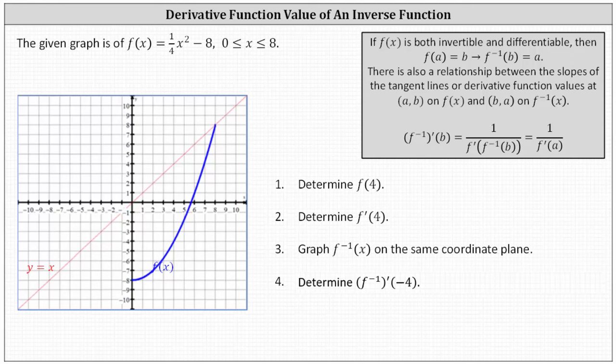Number one, we're asked to determine f of 4, which we can determine in two ways. We can determine this graphically, or we can substitute 4 for x into the original function. If we sub 4 into the original function, the square of 4 is 16, one-fourth times 16 is 4, and 4 minus 8 is negative 4.